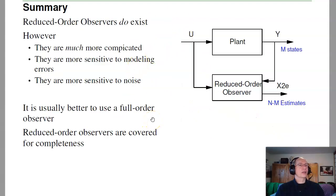So in summary, reduced order observers do exist. However, they're much more complicated. They're more sensitive to modeling errors. They're more sensitive to noise. So likewise, typically you use a full order observer even though you're measuring some of the states. But just for completeness, we have now seen reduced order observers in case anyone ever asks. So that's lecture number 22 for ECE 463 modern control. Reduced order observers.